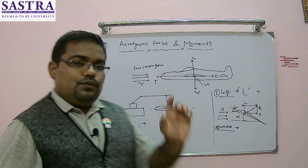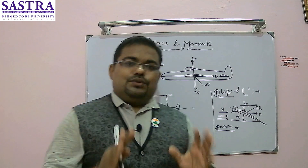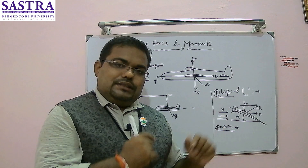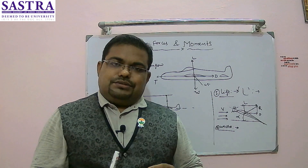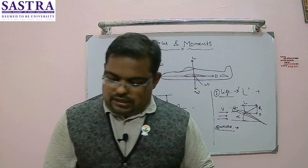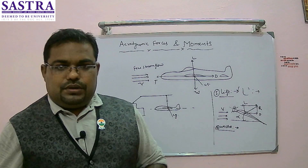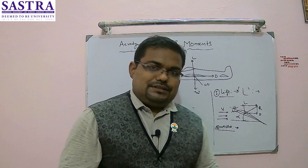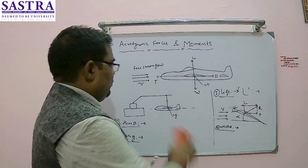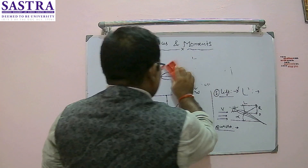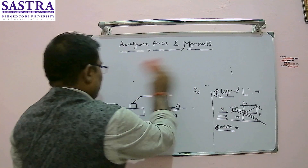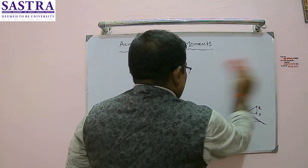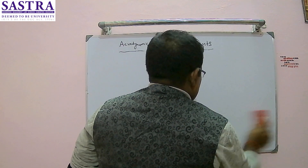These are the four basic forces that act on the aircraft. Now let's look at the moments. We have to consider the moments which act on the aircraft. In the anatomy of the aircraft lecture, I already mentioned the aircraft axis system. We have three axes: the longitudinal axis, passing from the nose to the tail through the center of gravity.